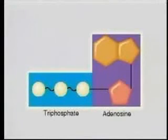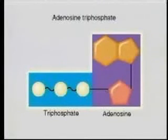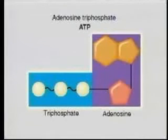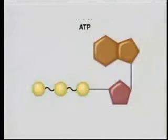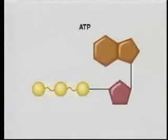Adenosine, together with the three phosphate groups, is called adenosine triphosphate, or ATP. Notice the wavy lines between the two outer phosphates. The wavy lines represent high-energy bonds.